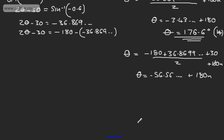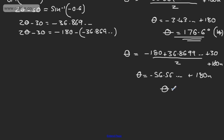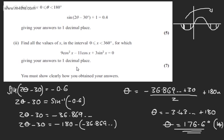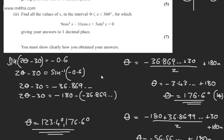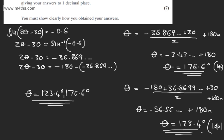So theta equals minus 56.56 plus multiples of 180. Adding 180 gives 123.4 degrees to one decimal place. Our two answers are theta equals 123.4 degrees and 176.6 degrees, and those are the only two solutions. It is entirely up to you how you solve this — I did it with the negative values, but you might use positive values. The answers are 123.4 and 176.6.